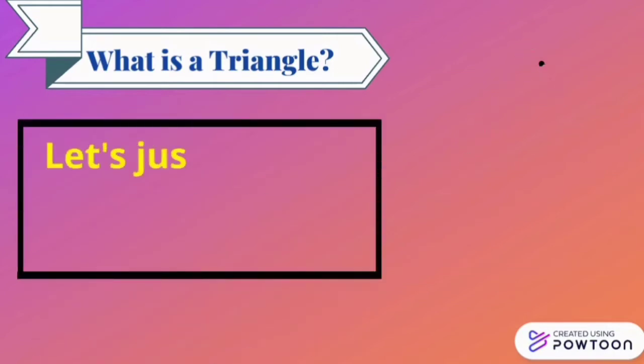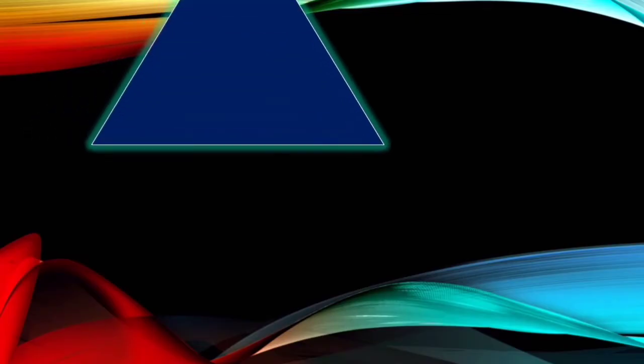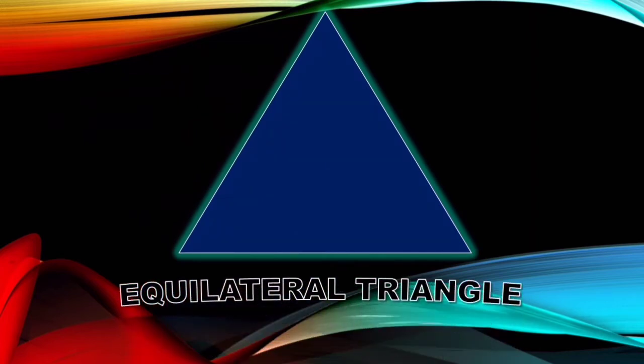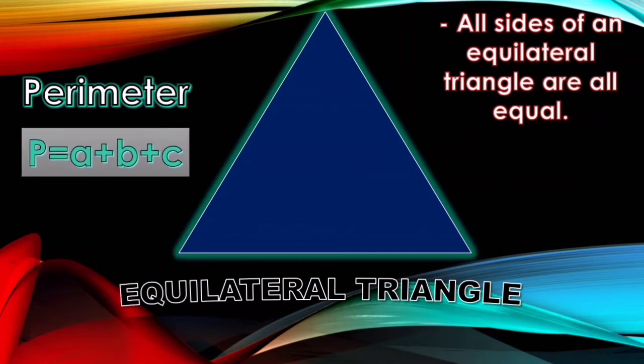Let's just focus on equilateral triangle. This is an example of an equilateral triangle. Did you know that all sides of an equilateral triangle are all equal? Yes, they are. We will focus on how to get the perimeter of a triangle using a formula to guide us. It is not only for equilateral triangles, but also for the other types of triangle.